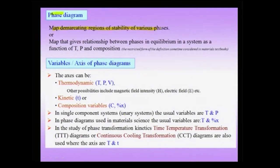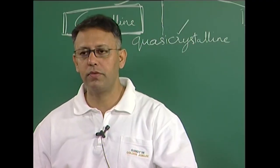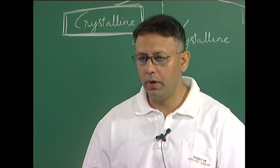We also defined a phase diagram to be a map demarcating regions of stability of various phases. Typical variables, which may be called the axes of a phase diagram, can be thermodynamic, kinetic, or composition variables. As I pointed out, metallurgists deal with phase diagrams involving thermodynamic and composition variables. Typically material scientists draw phase diagrams at one atmosphere pressure. Kinetic variables are typically not included in normal phase diagrams — they should be considered part of time-temperature transformation diagrams, which are also maps and can also be considered phase diagrams, but typically not included in normal chapters on phase diagrams.